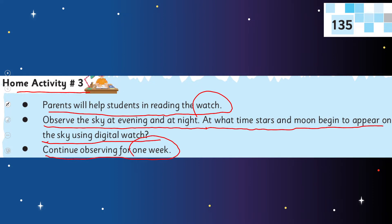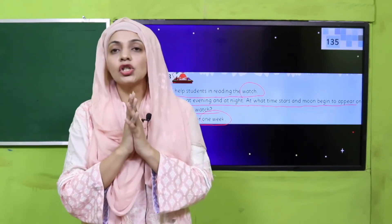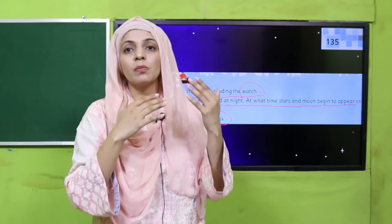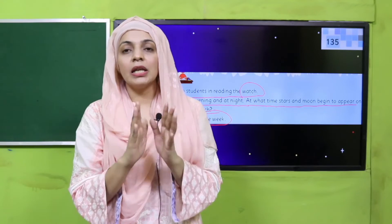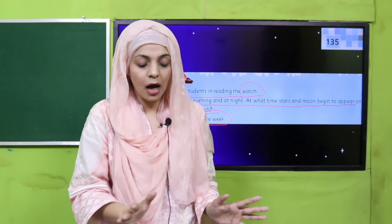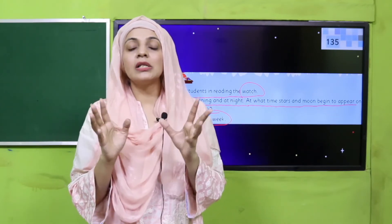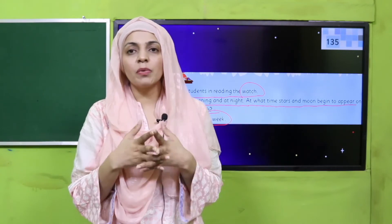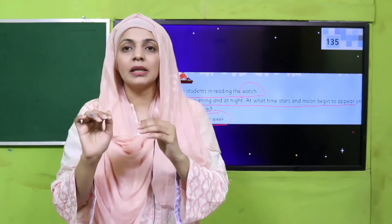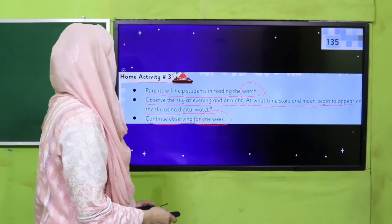Aapne yeh cheez observe karni hai ki rozana sham ke waqt kis time chand aur sitare aapko aasmaan pe nazar aana shuru ho jaate hain. Aapne ek hafte ke liye continuously is time ko note down karna hai using a stopwatch, jo aap mobile mein aaram se istemal kar sakte hain. Digital watch aapke mobile phones mein bhi hoti hai, toh usse aap exact time note kar sakte hain.